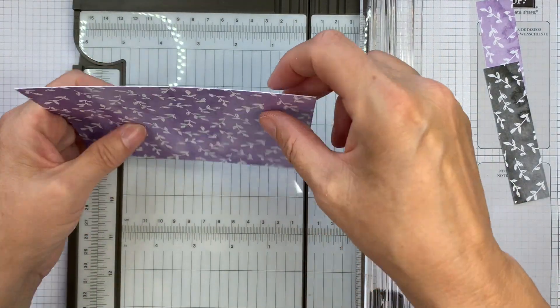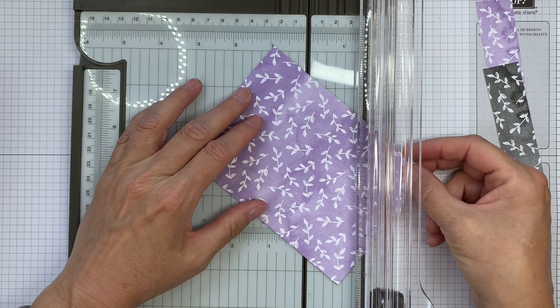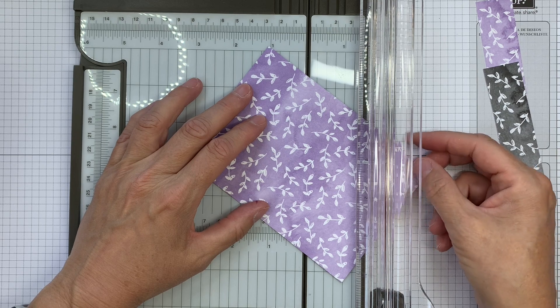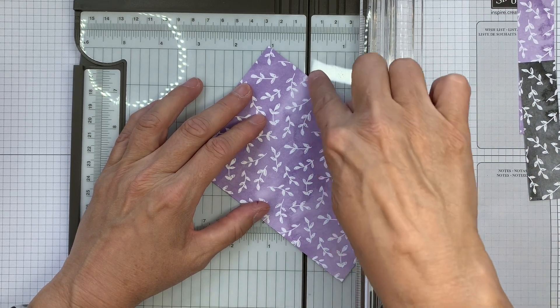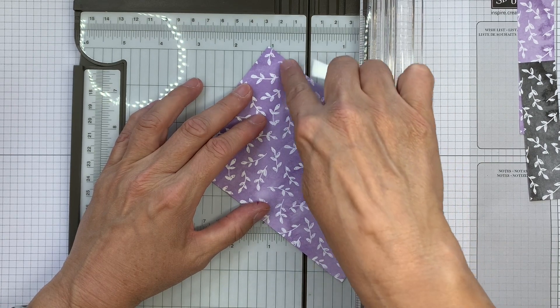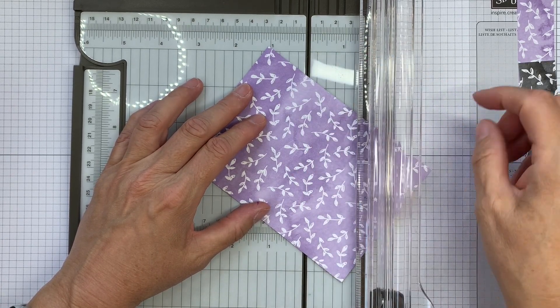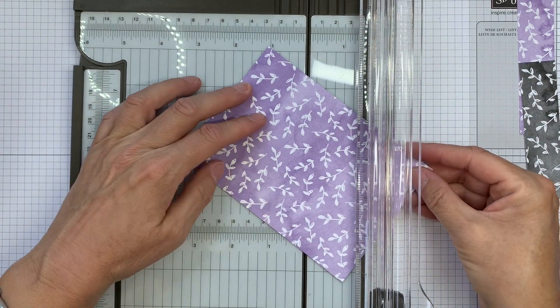Now again I'm going to get these lined up like that and then I'm going to do this and I'm just doing it by eye. I'm not getting the ruler out to check measurements or anything. But I'm going to get it lined up so that it's a little over an inch, maybe an inch and a quarter down from one end and a similar amount from the other.